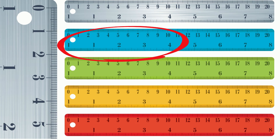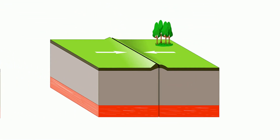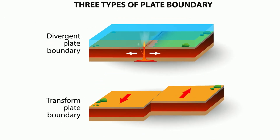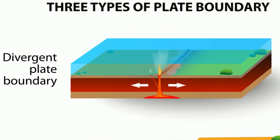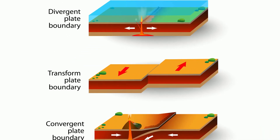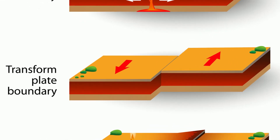How do the tectonic plates move? When they move towards one another, this is called a convergent plate boundary. When they move away from one another, this is called a divergent plate boundary. And when they move in opposite directions, it is called a transform plate boundary.